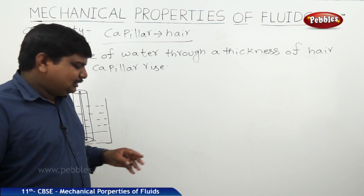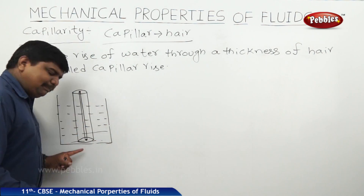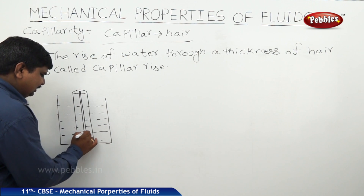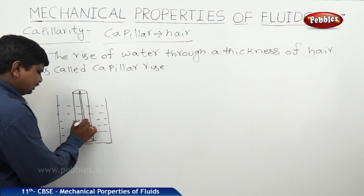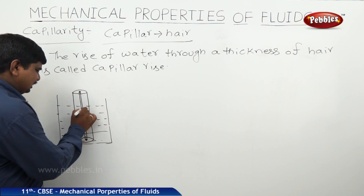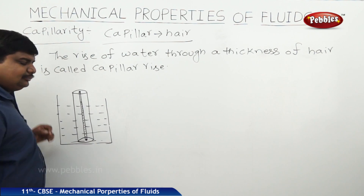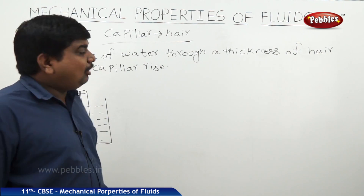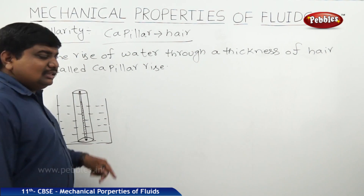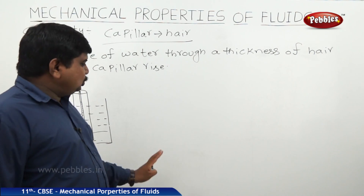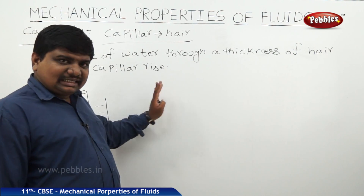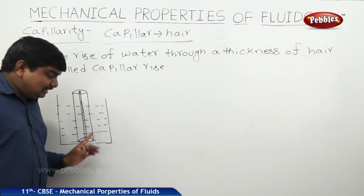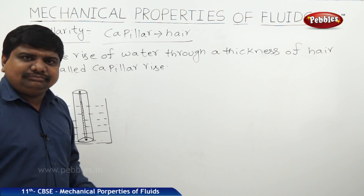When the tube is dipped in the water, through this gap there will be a rise in water up to a certain height. This property is called capillarity — the ability to raise water to a height through a capillary cross section.